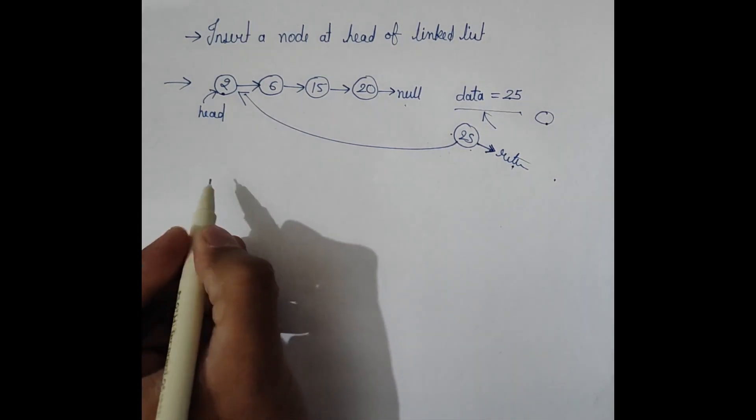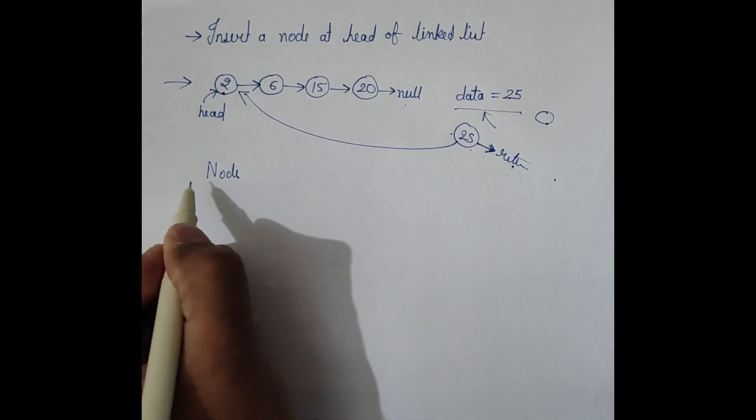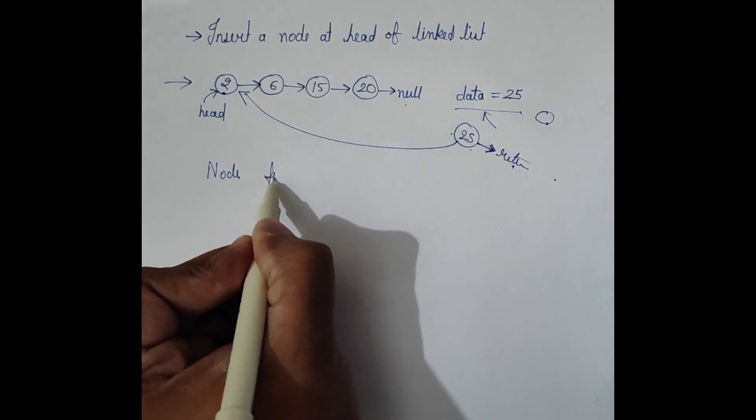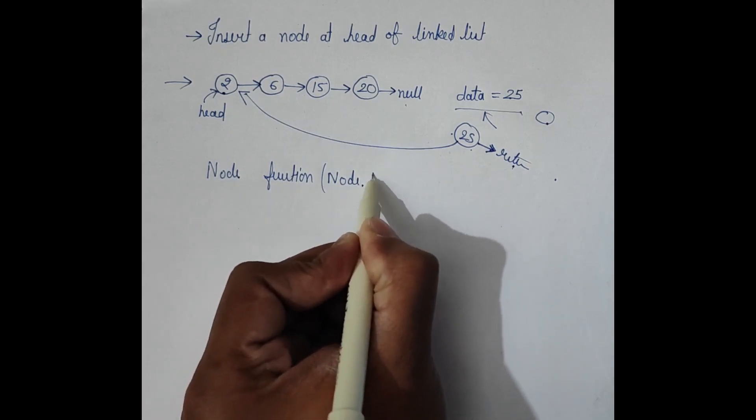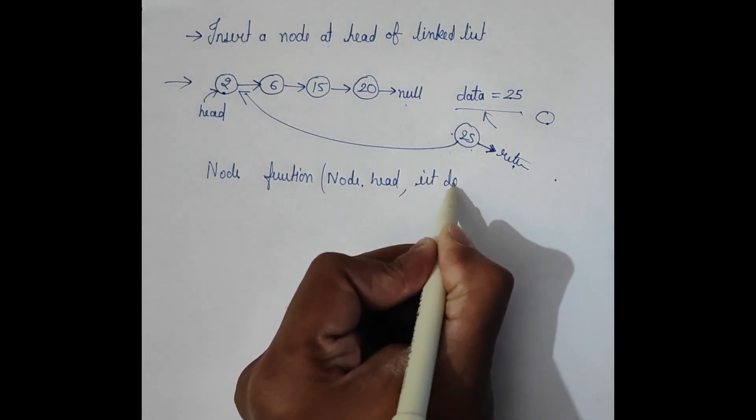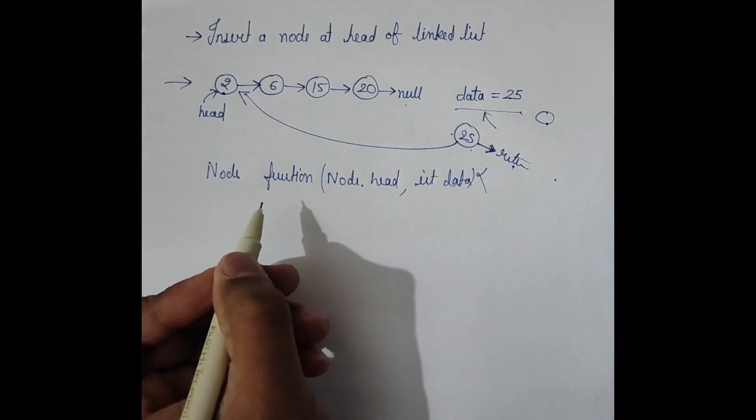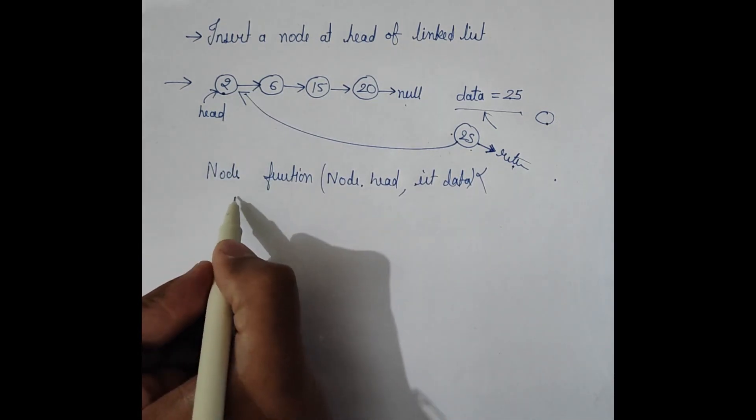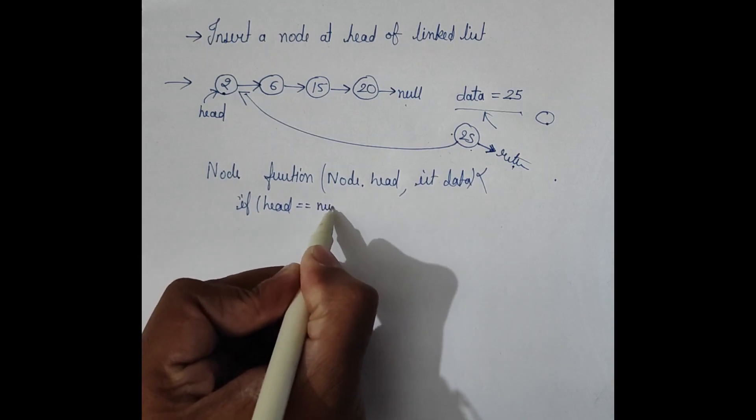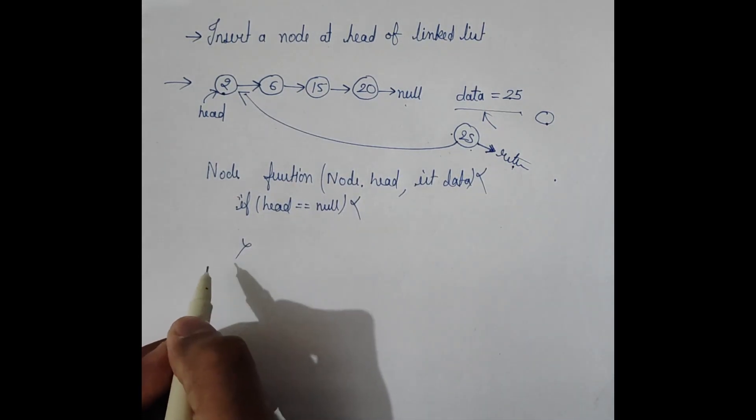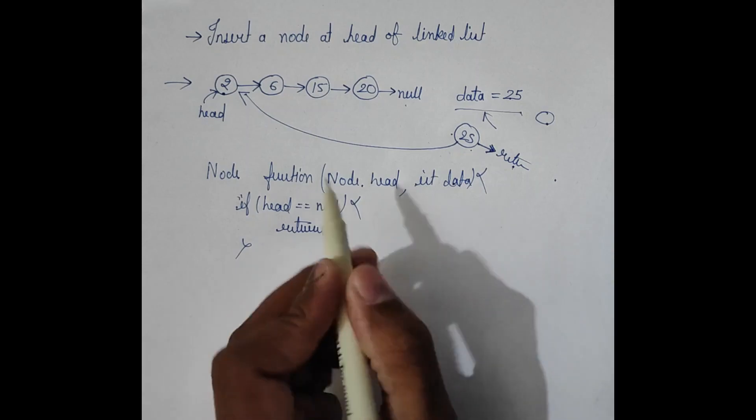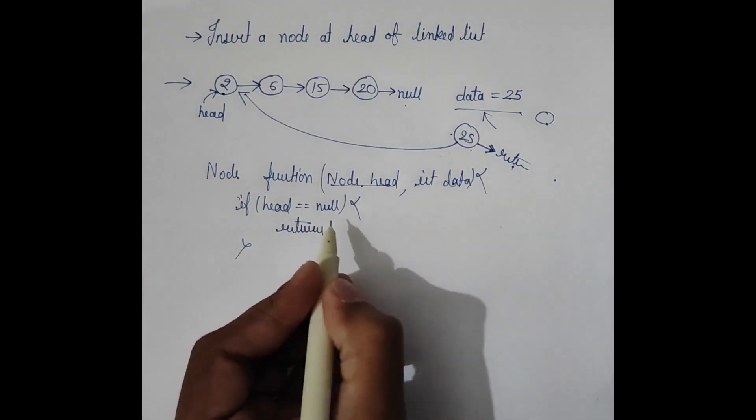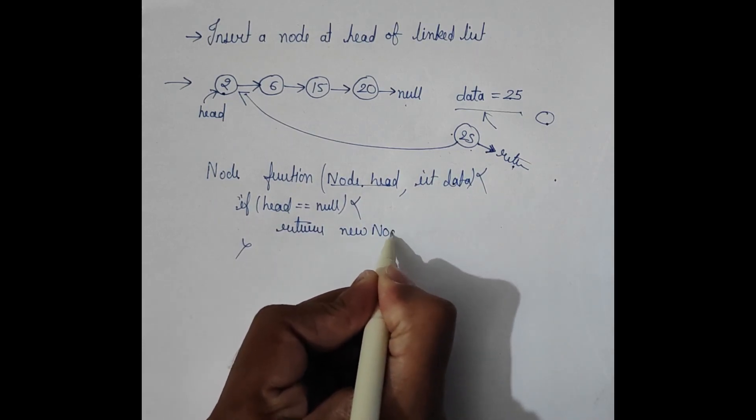For example, we have a function given that returns the head node. Function has head node and data given. So check if head is null. Suppose head is null, so return new node with the data. If null, we create and return new node.